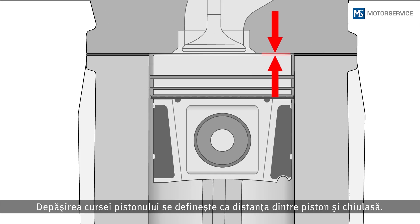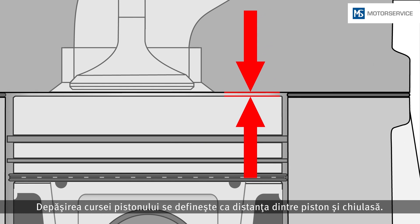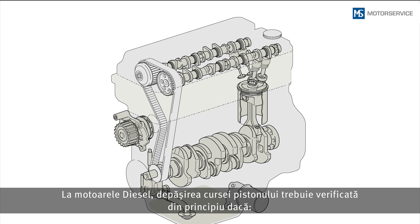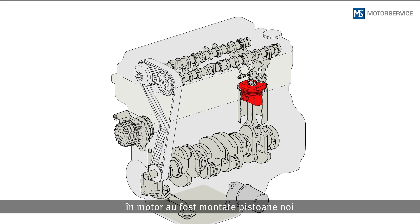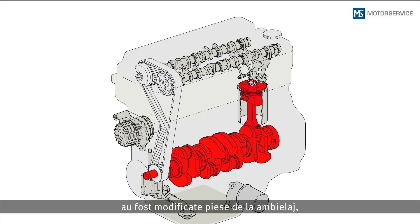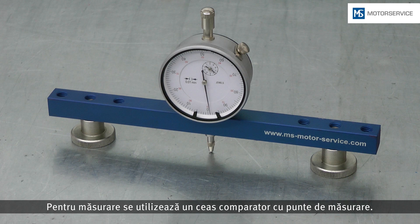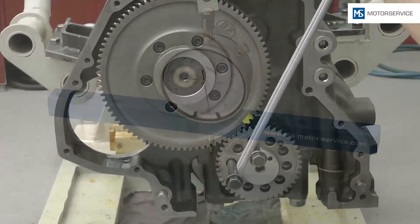The piston protrusion defines the distance between the piston and cylinder head in diesel engines. The piston protrusion must always be checked if new pistons have been installed, if engine parts on the crank mechanism have been modified, or if the face of the engine block has been reworked. A dial gauge with a measuring bridge is used for measurement.